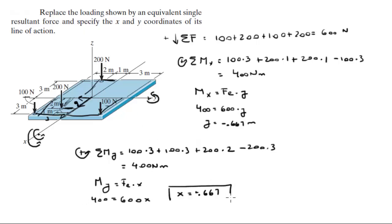This is the y coordinate, x coordinate, and the resultant force is 600 newtons obviously going down because all the forces are going down. Final answers.